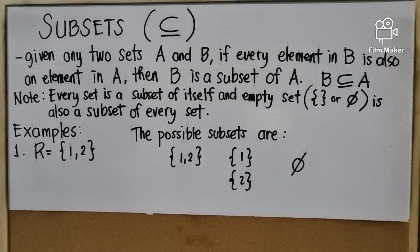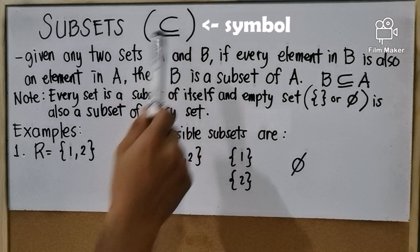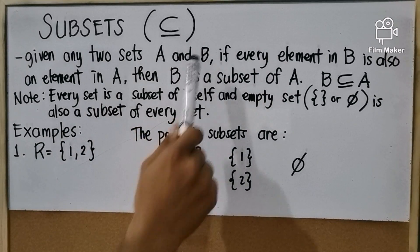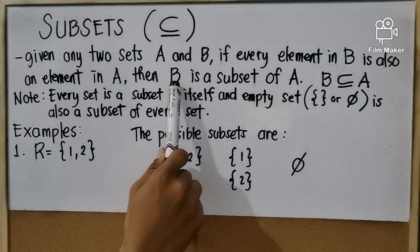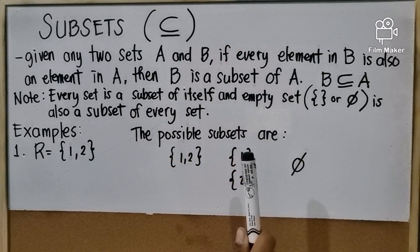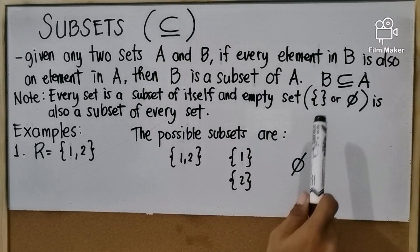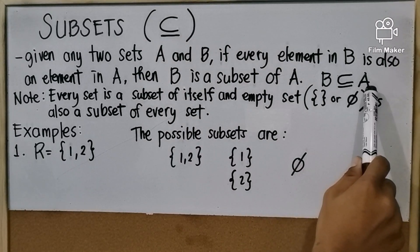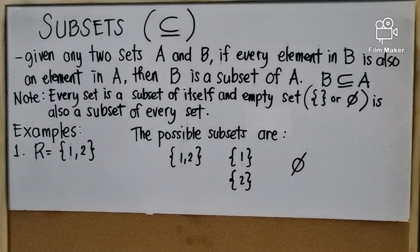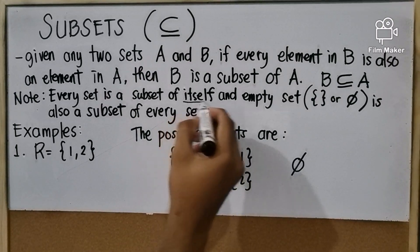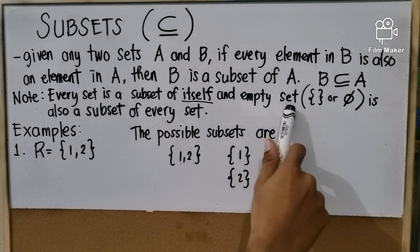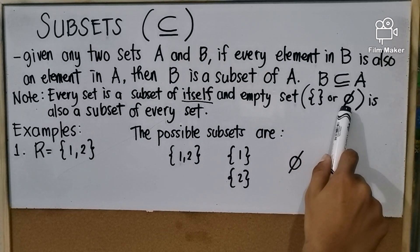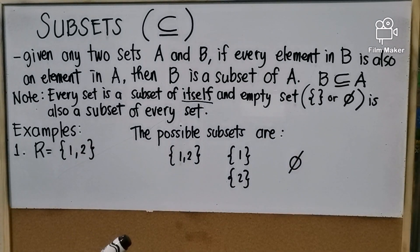Now we have subsets, which is denoted by the subset symbol. Given any two sets A and B, if every element in B is also an element in A, then B is a subset of A — written as B ⊆ A. Note: every set is a subset of itself, and the empty set is also a subset of every set.